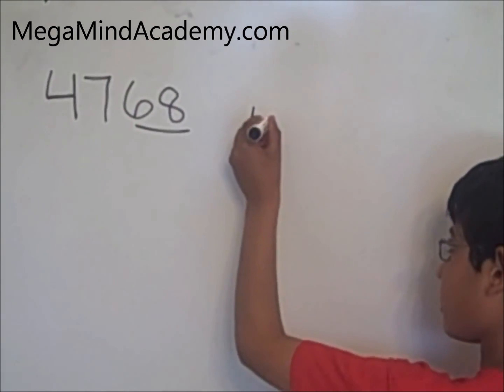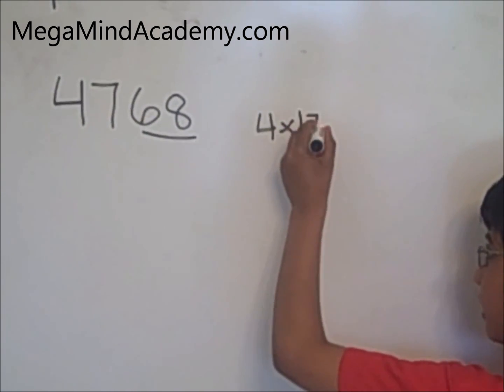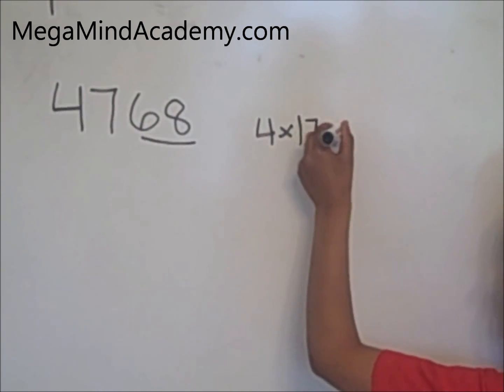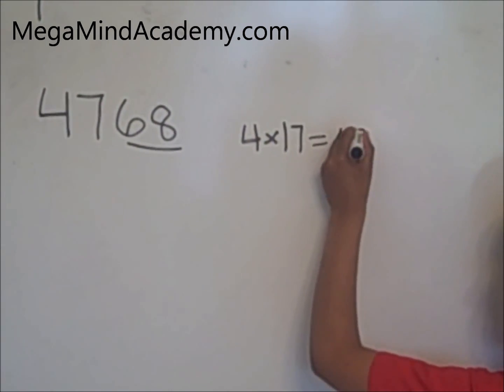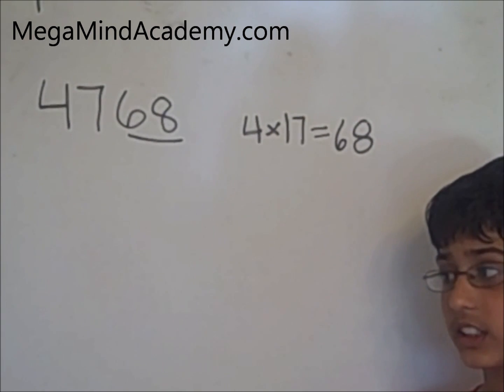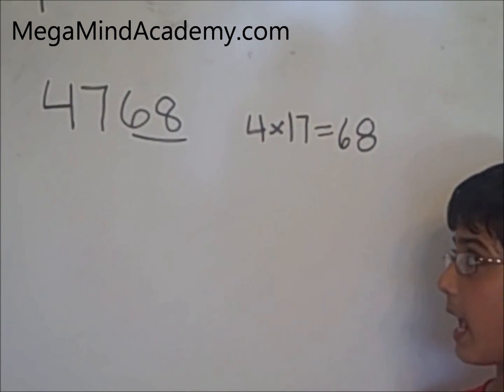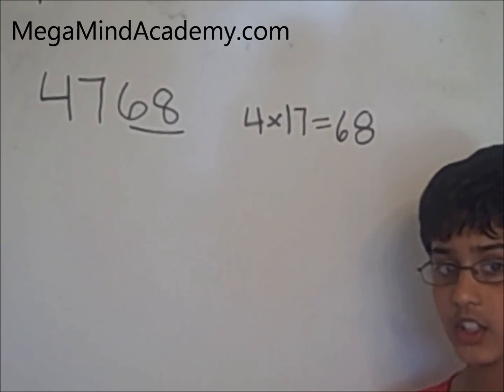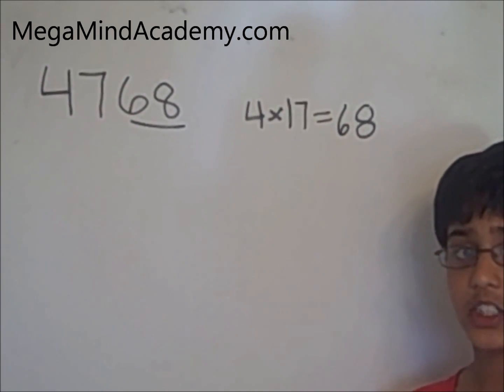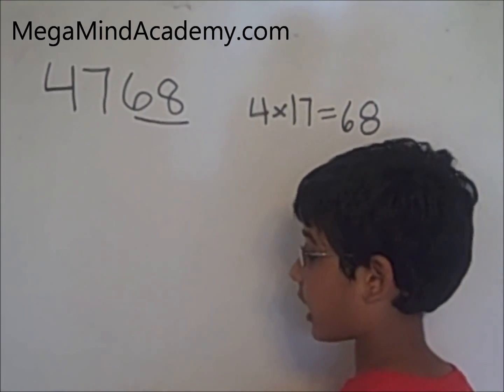4 times 17 equals 68. Since 4 times 17 equals 68, 68 is divisible by four. That means 4768 is divisible by four. So let's check it out.